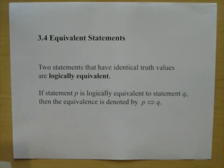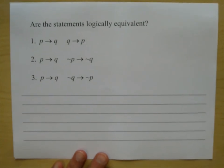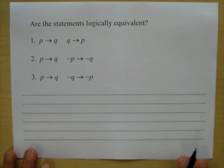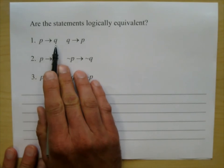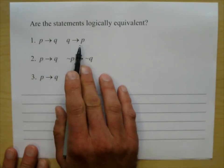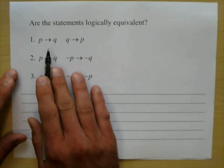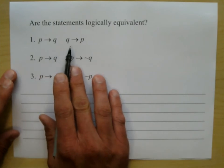Let's take a look at this. Are the statements logically equivalent? There are three problems here. Problem one: if P then Q versus if Q then P. That's the conditional compared to something else. Let's go ahead and create a truth table — I'm going to put both of those statements on the same truth table.